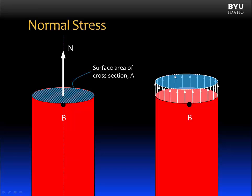If we do that, we can represent it with this picture here on the right. What we're going to call this distribution of force over the whole area is a normal stress. We give it the symbol — the Greek letter sigma, a lowercase sigma — and sigma will be used to represent normal stress throughout this entire course. The stress is normal because it's perpendicular to the surface and in the direction of the internal resultant normal force.